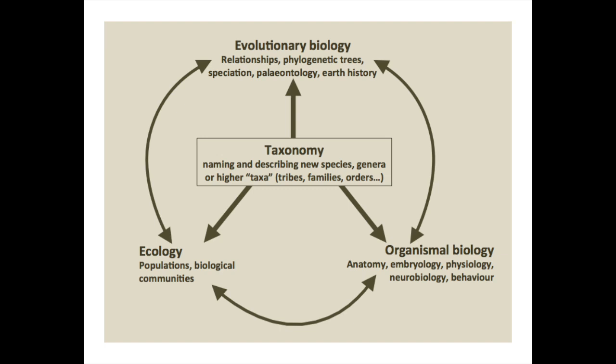Taxonomy is not just stamp collecting. It forms the basis of all biology, because it's only through describing species that you can partition the natural world into distinct living entities. In evolutionary biology, if we didn't know where species boundaries lie, we wouldn't be able to explore evolutionary relationships, build phylogenetic trees, understand speciation, or understand the fossil record. Likewise, taxonomy forms the basis for ecology — it's only through knowing what species are out there that we can study the interactions of populations and communities that form ecosystems.